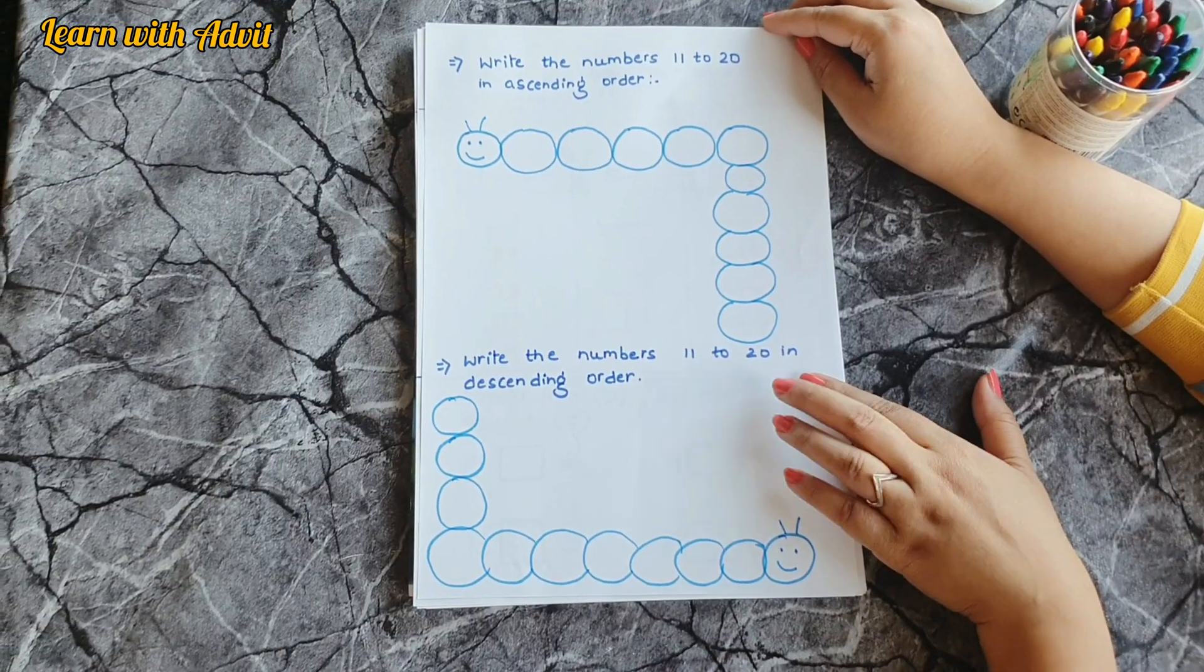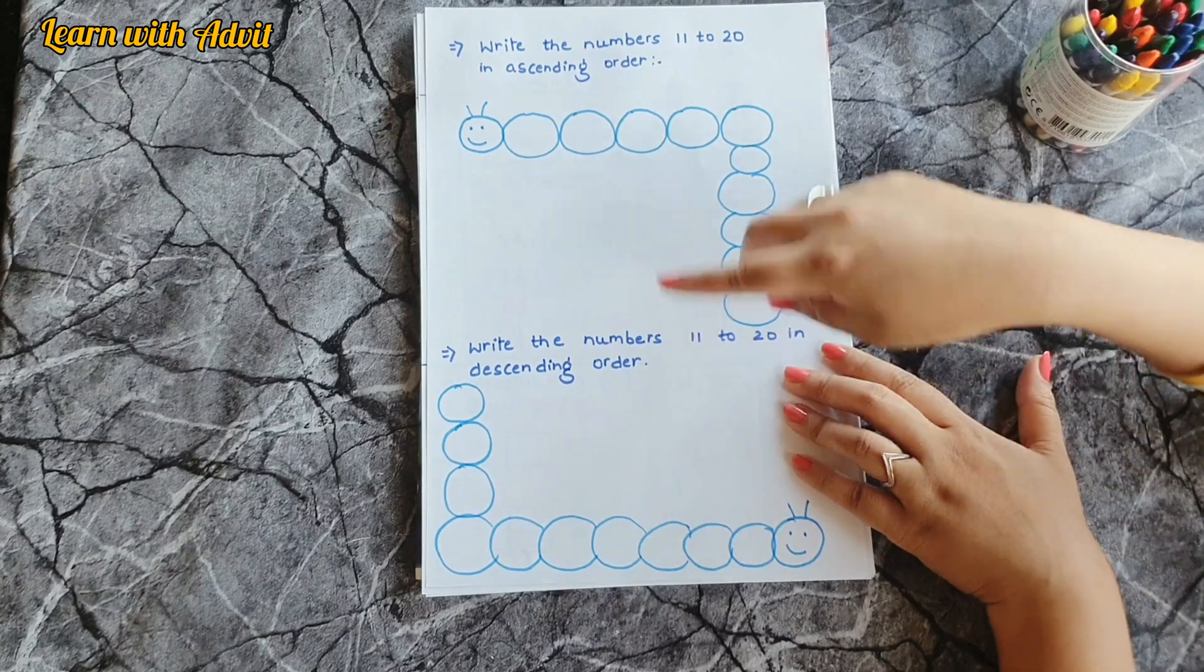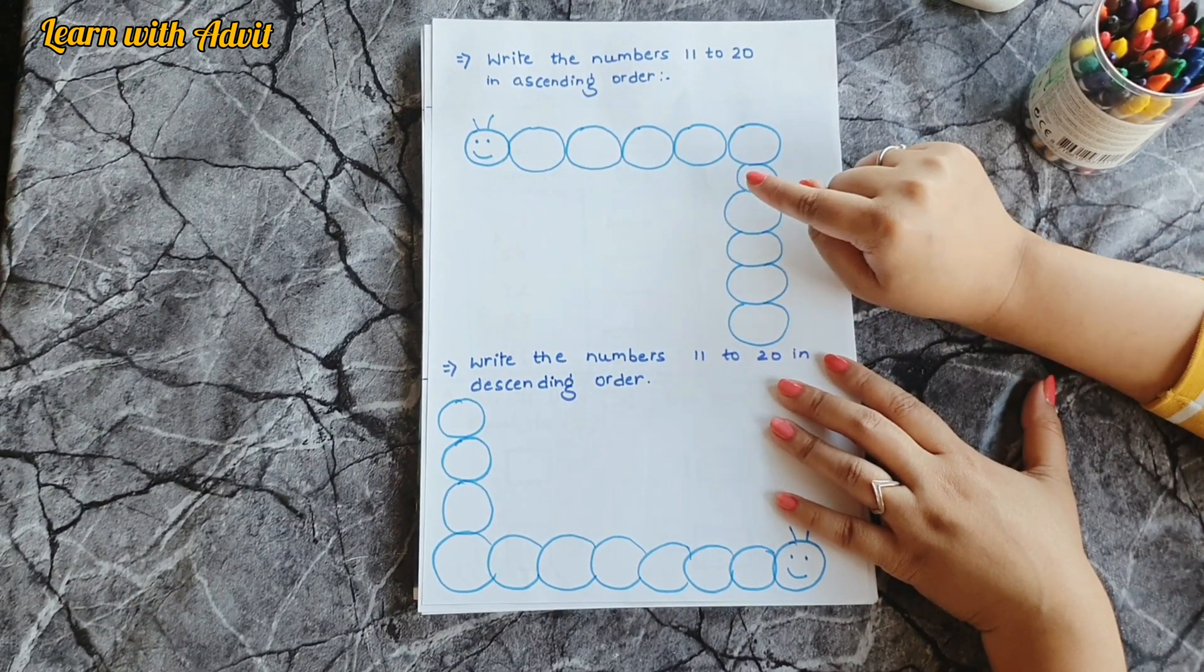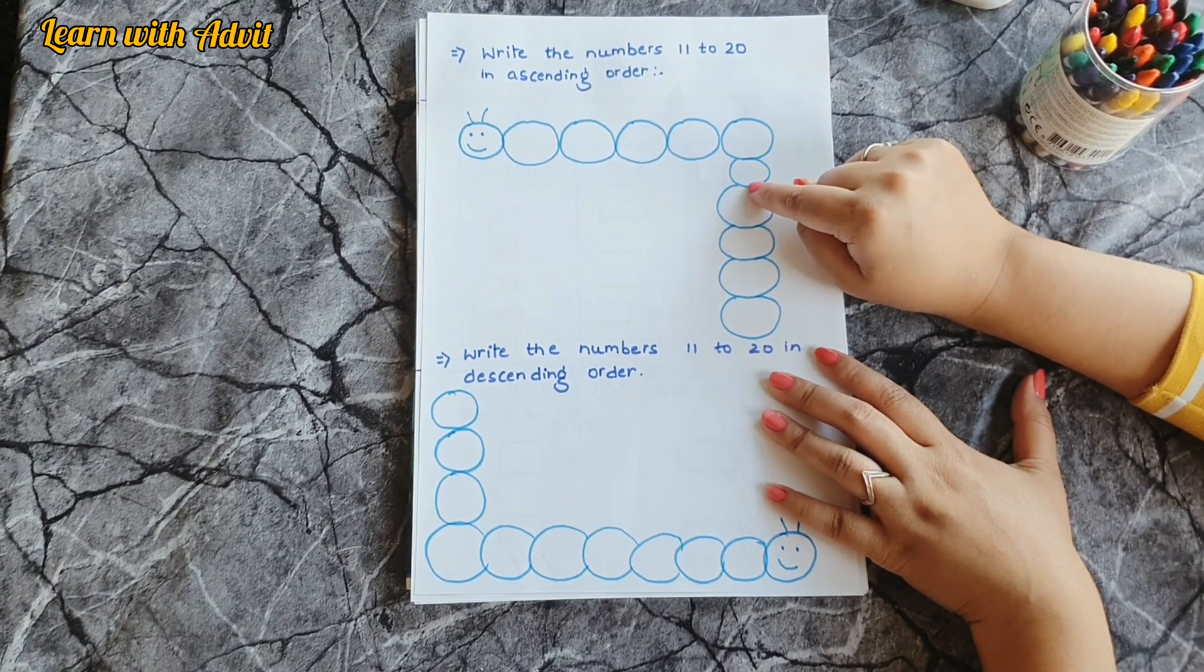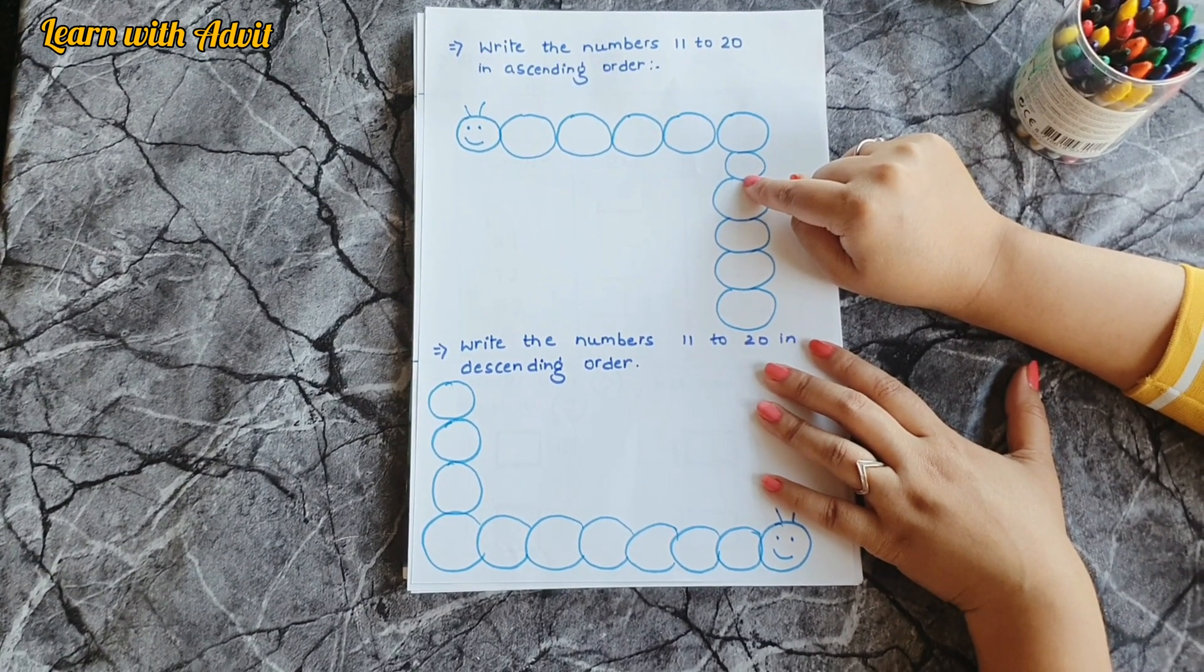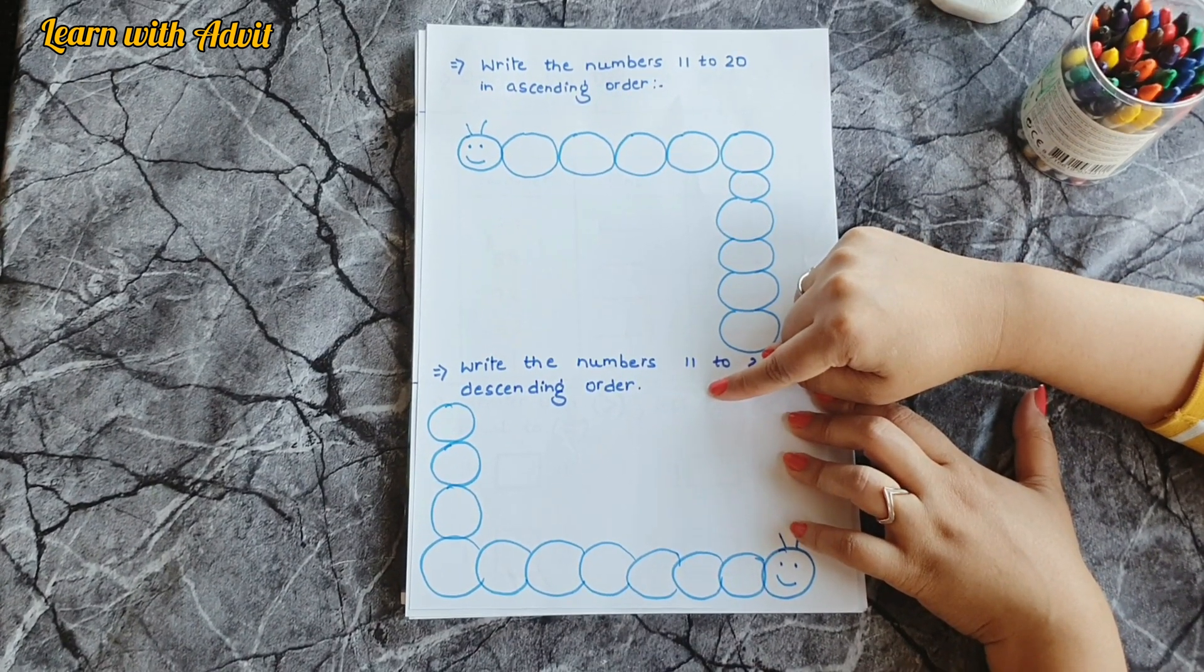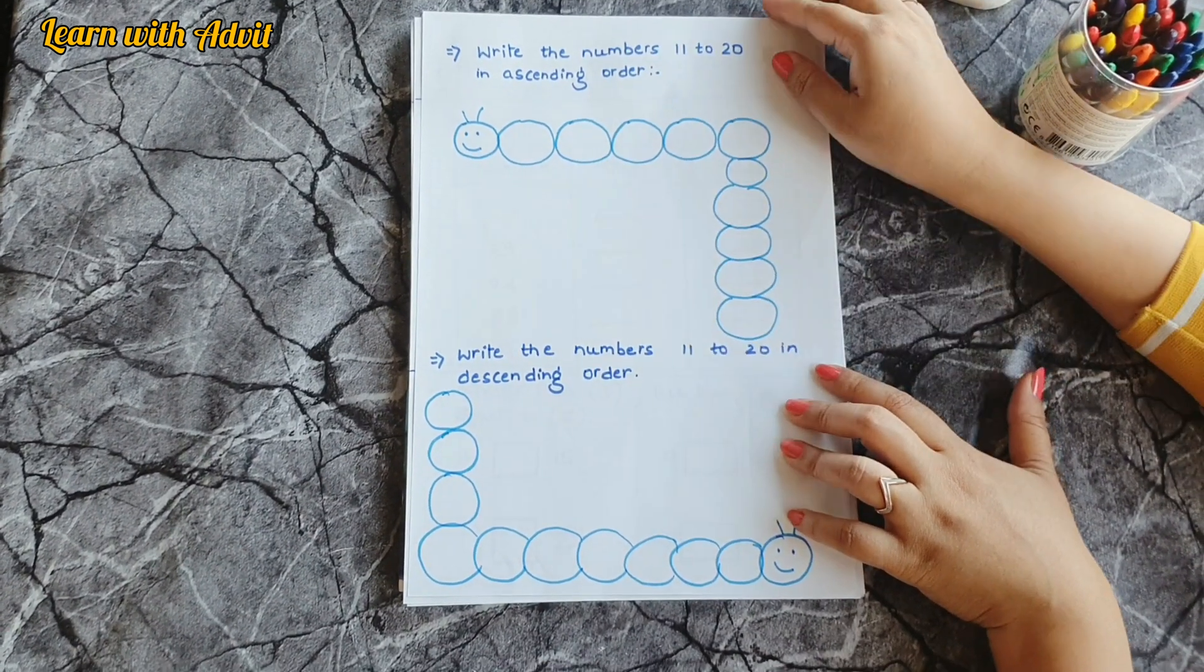In this sheet, I have drawn two caterpillars. The first one, you have to write the numbers 11 to 20 in ascending order. Ascending order means you have to write the numbers from small to big. And descending means big to small. Very good. Come on, start writing. You have to write the numbers 11 to 20.